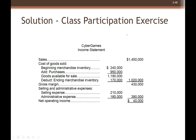I have pasted the solution here, so you can compare. Sales minus cost of goods sold gives us gross profit. And from gross profit, you less selling and admin to find out the net operating income.